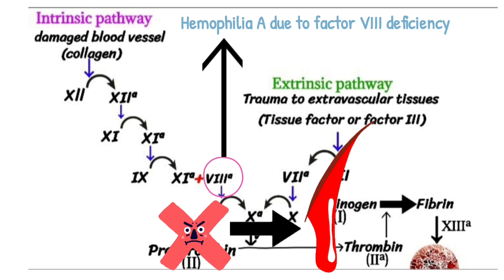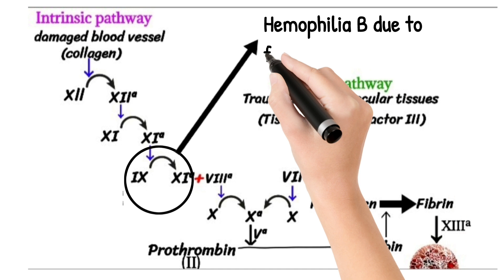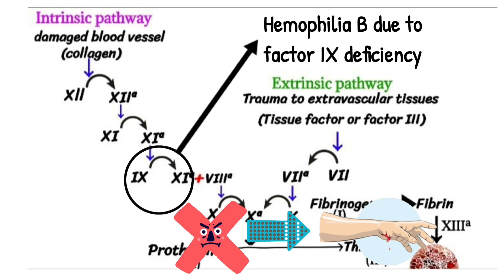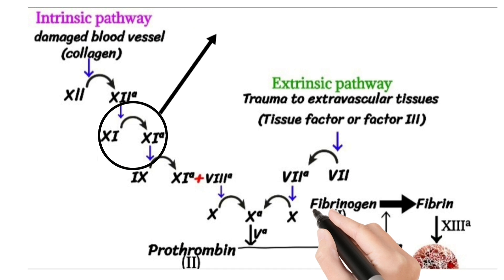Haemophilia B is a moderate type due to factor 9 deficiency. Looking at the intrinsic pathway, this also leads to bleeding because the missing factor 9 is essential for coagulation. Haemophilia C is a mild type due to factor 11 deficiency, most common in Ashkenazi Jews. This also leads to bleeding through deficiency of factor 11 in the intrinsic pathway.